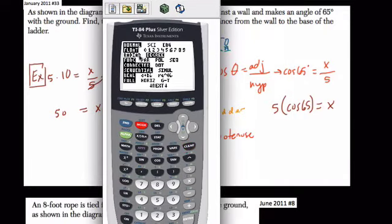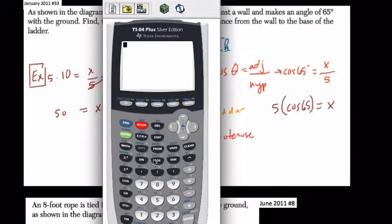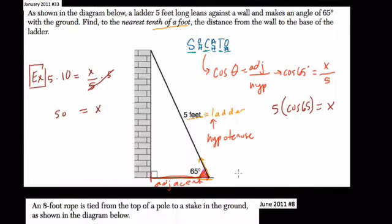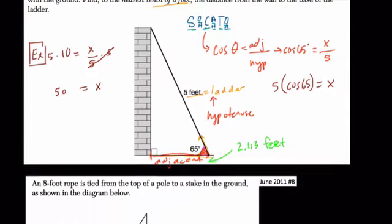On the graphing calculator, make sure you're in degree mode. Hit the cosine of 65 degrees, then multiply by 5. The distance is 2.113 feet. That's all we're using — our cosine ratio.